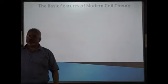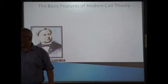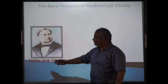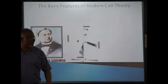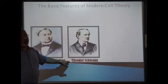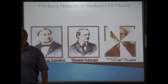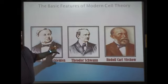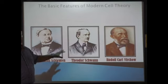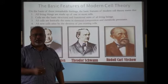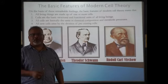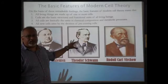The basic features of modern cell theory come from Matthias Jacob Schleiden, Theodor Schwann, and Rudolf Karl Virchow. There are four points of modern cell theory that are very important — not only in your current class but also when you move to higher classes.